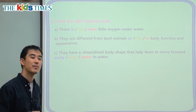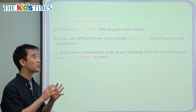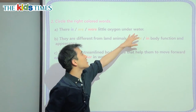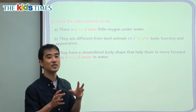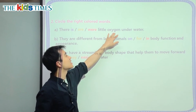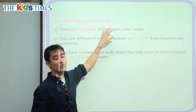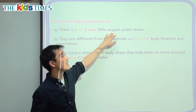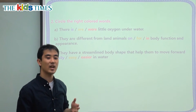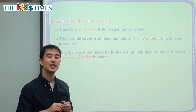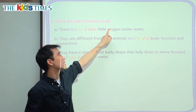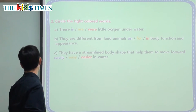Now we have three key grammar practice questions. First one: There blank little oxygen underwater. Oxygen is the main subject here. Oxygen is what we call a non-count noun — something we can't count. That means there is only one. So when there's one, we use 'is.' For example, for whales — many whales — we say 'are.' But one whale — 'is.' Oxygen — 'is,' because oxygen is only one.